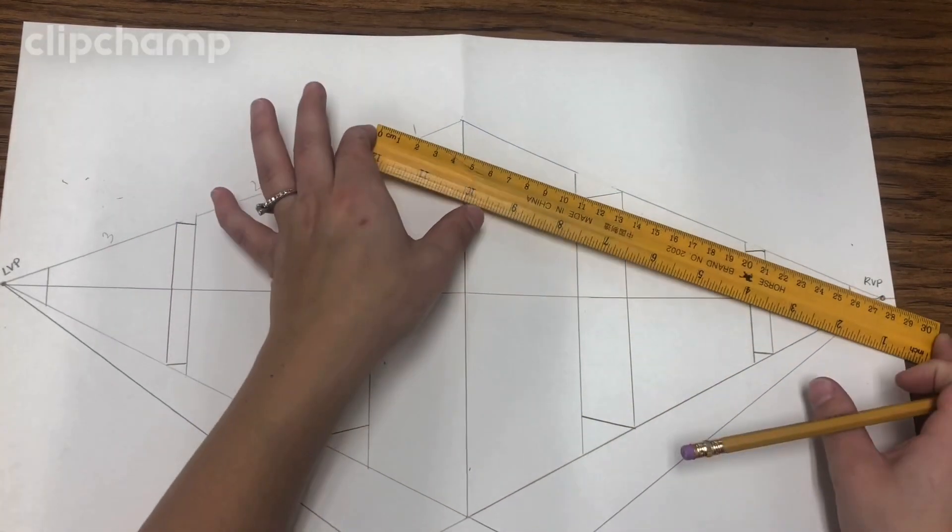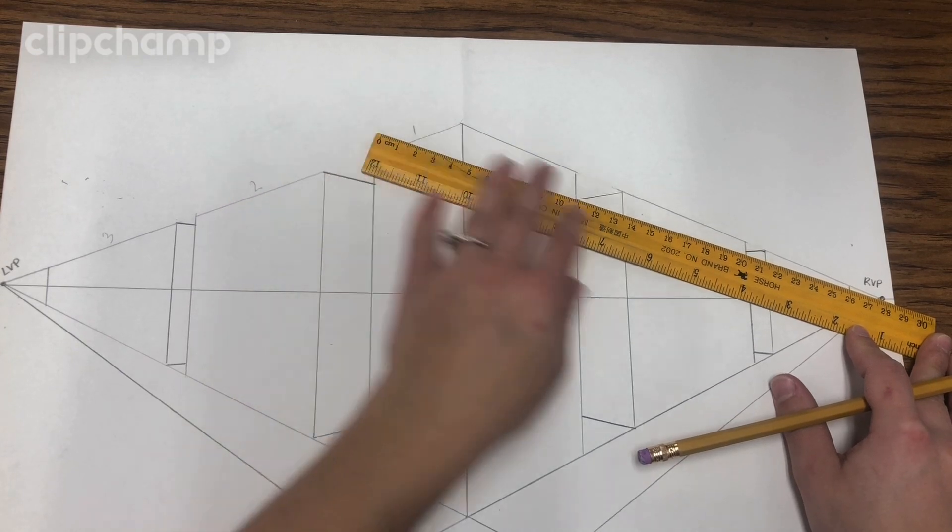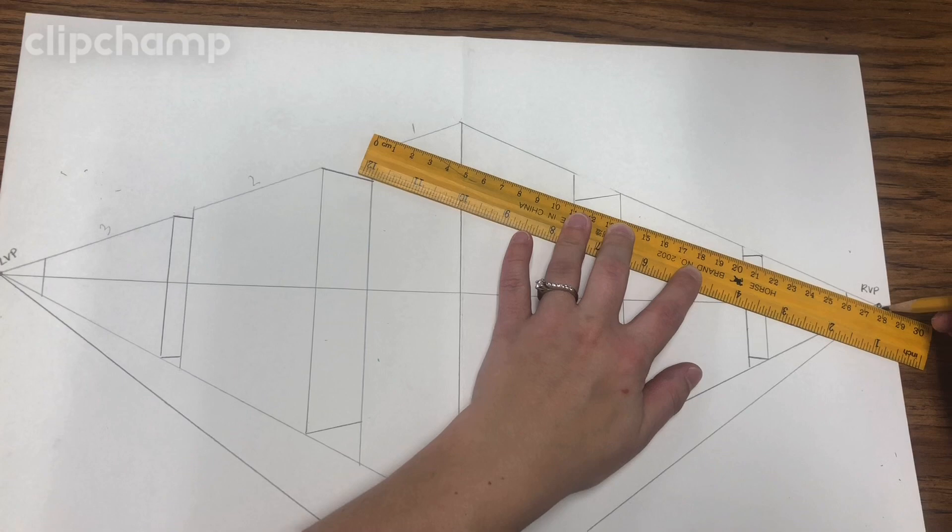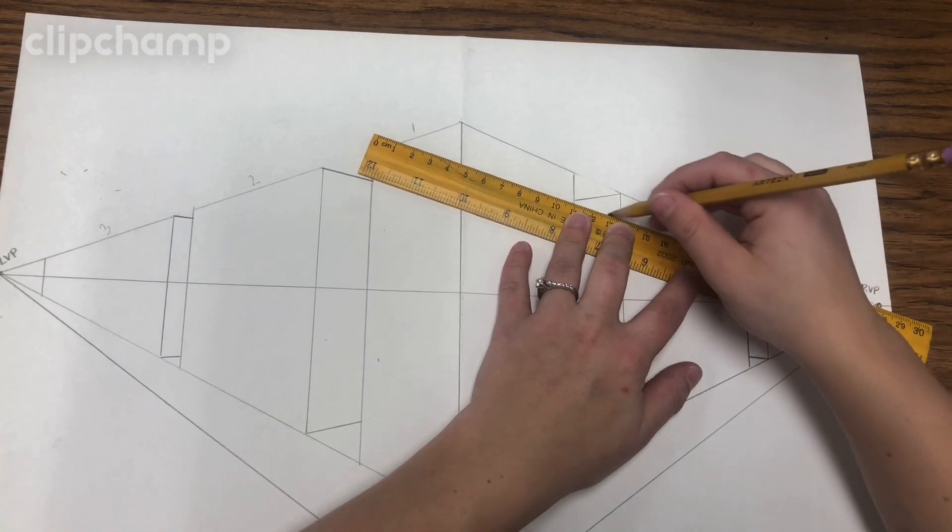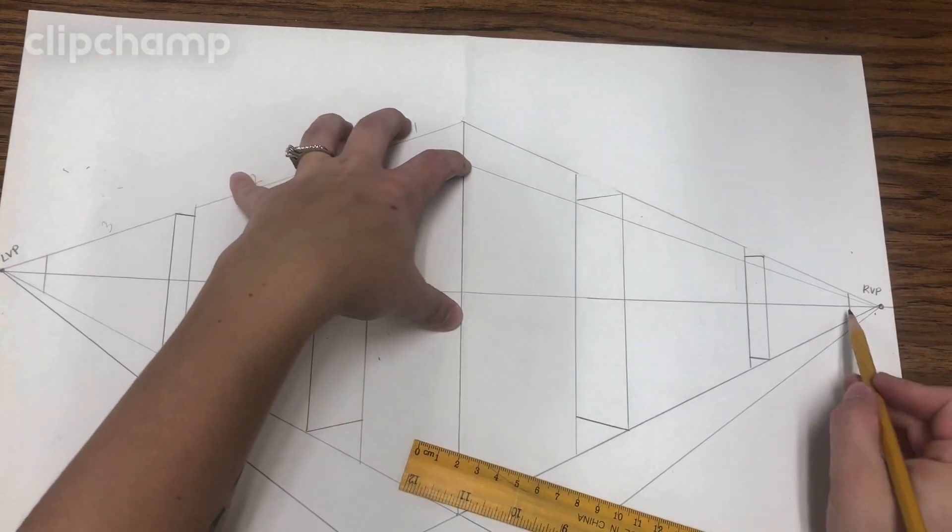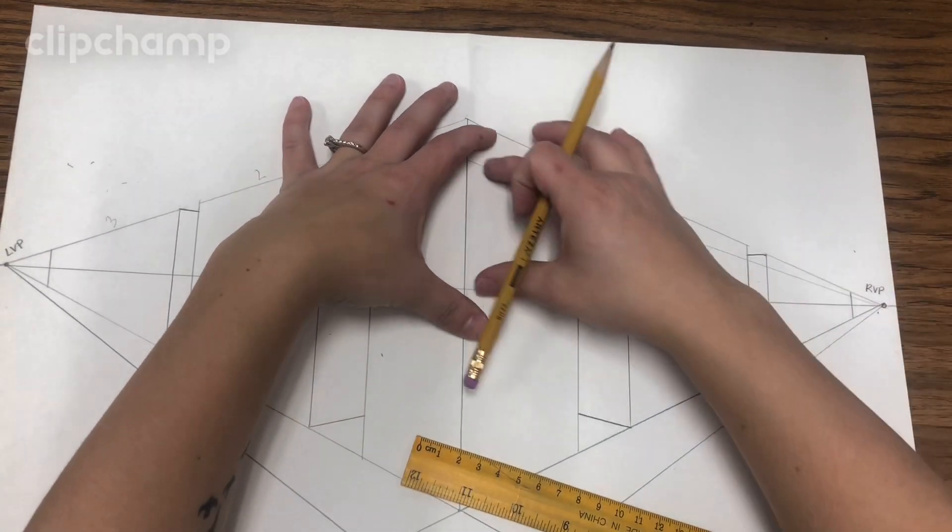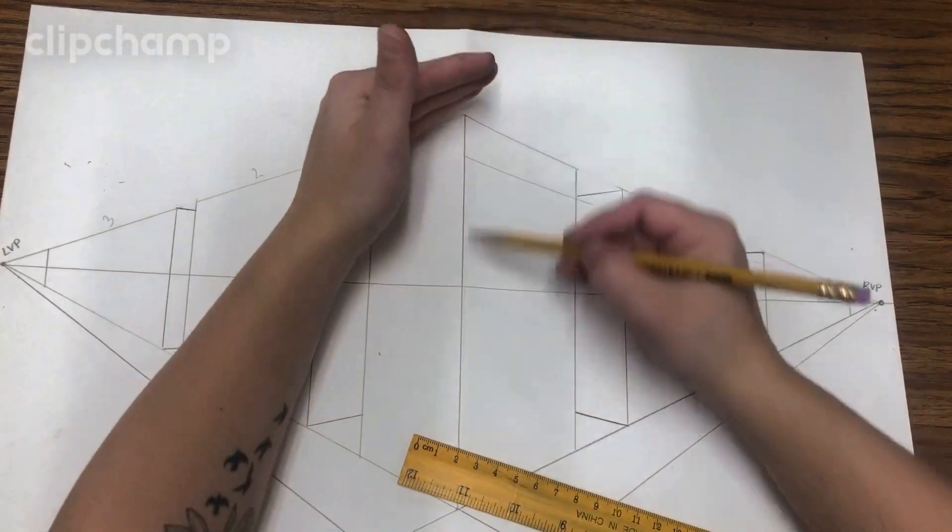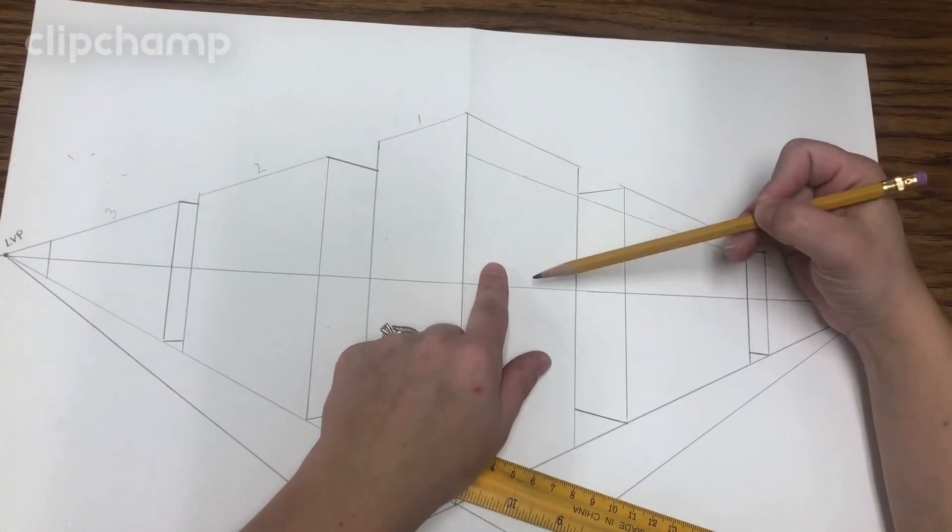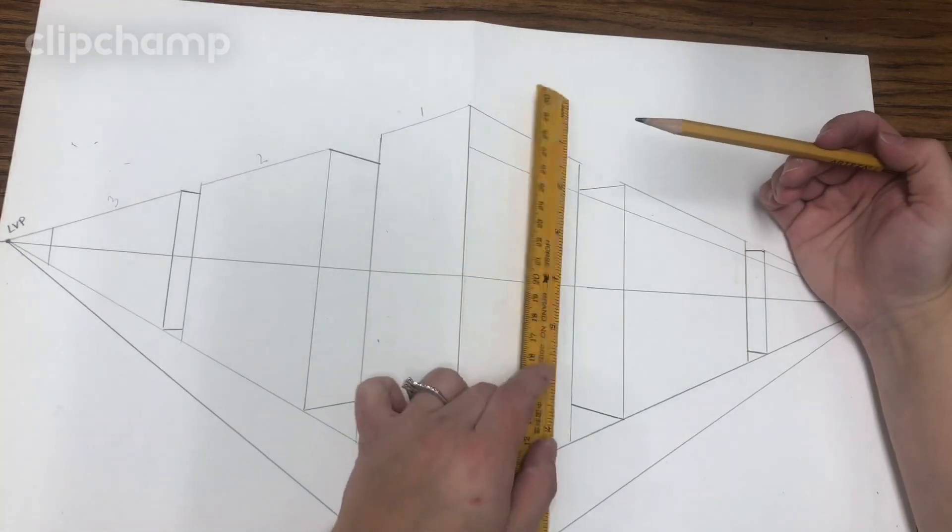I'm going to take my ruler, line it up to the right vanishing point, and I'm going to angle it so that I can create another line from my vanishing point to touch this middle line. Now that's creating this little triangle. You see it tapers off and gets skinnier and skinnier. That's going to be the top of my window and the bottom of my window.